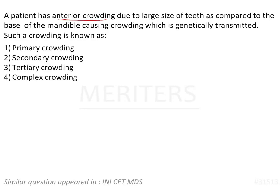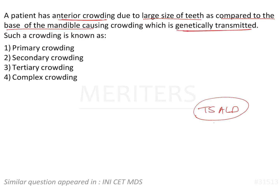A patient has anterior crowding due to large size of teeth compared to the base of the mandible. There is tooth size arch length deficiency which is causing crowding, and this is genetically transmitted.